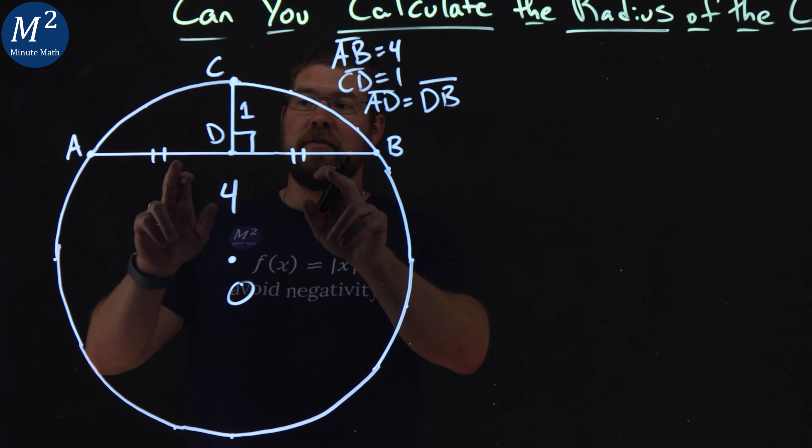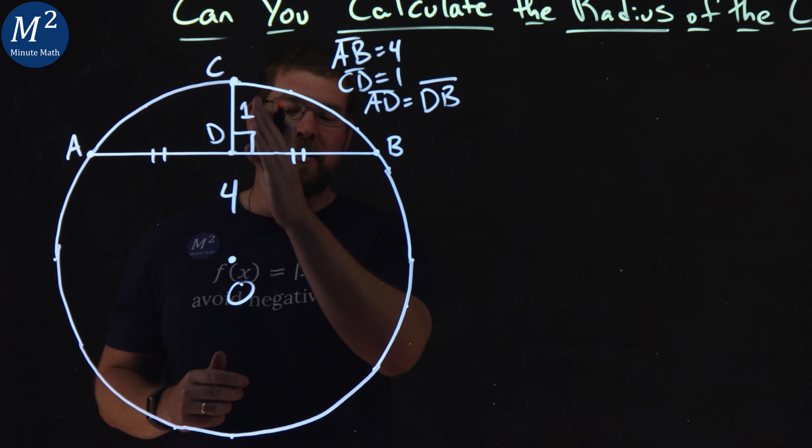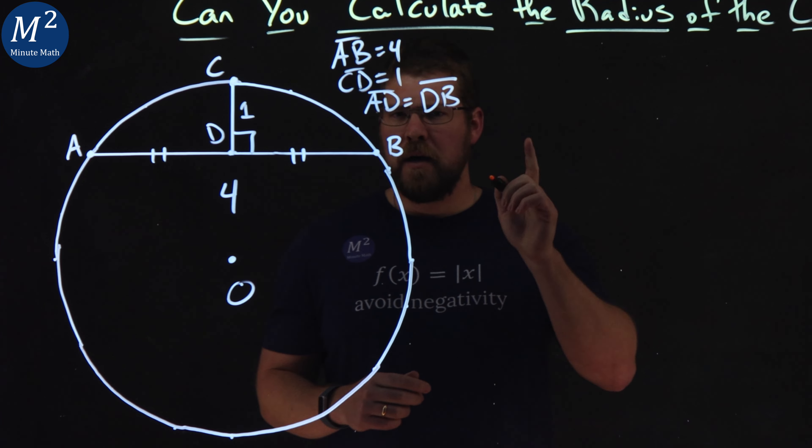So a radius is perpendicular to a chord if it divides it exactly in half. And so we have this divided exactly in half. It's perpendicular here. So that means CD would continue on to touch the circle. And that's going to be important in a little bit.